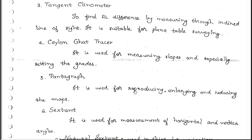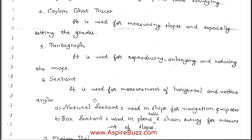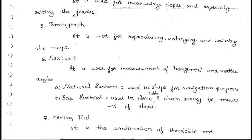The pantograph is used for reproducing, enlarging, and reducing maps. The sextant is used for measurement of horizontal and vertical angles.